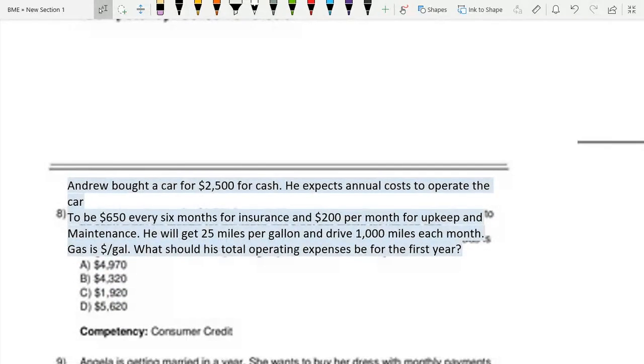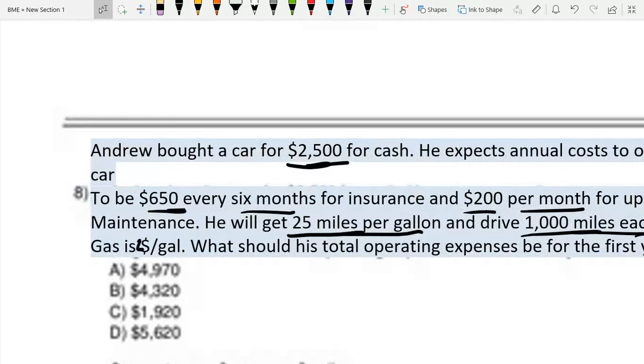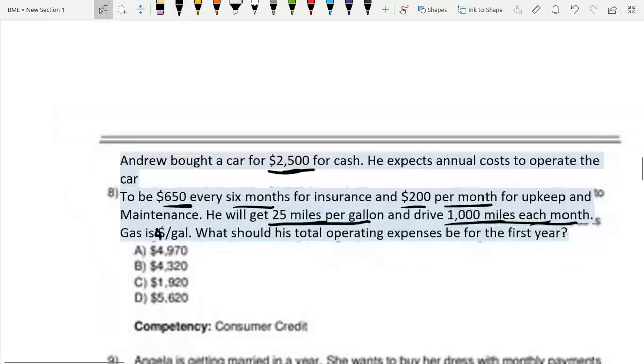Now, the next question is Andrew bought a car for $2,500 for cash. He expects annual costs to operate the car to be $650 every six months for insurance and $200 per month for upkeep and maintenance. He will get 25 miles per gallon and drive 1,000 miles each month. Gas is, oh, I'm sorry, this was $4 per gallon.